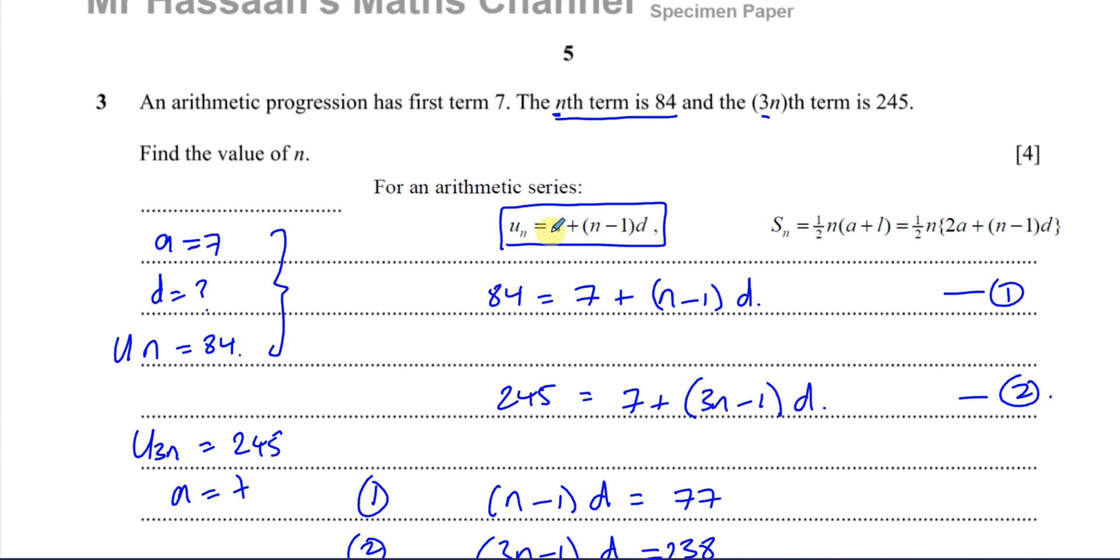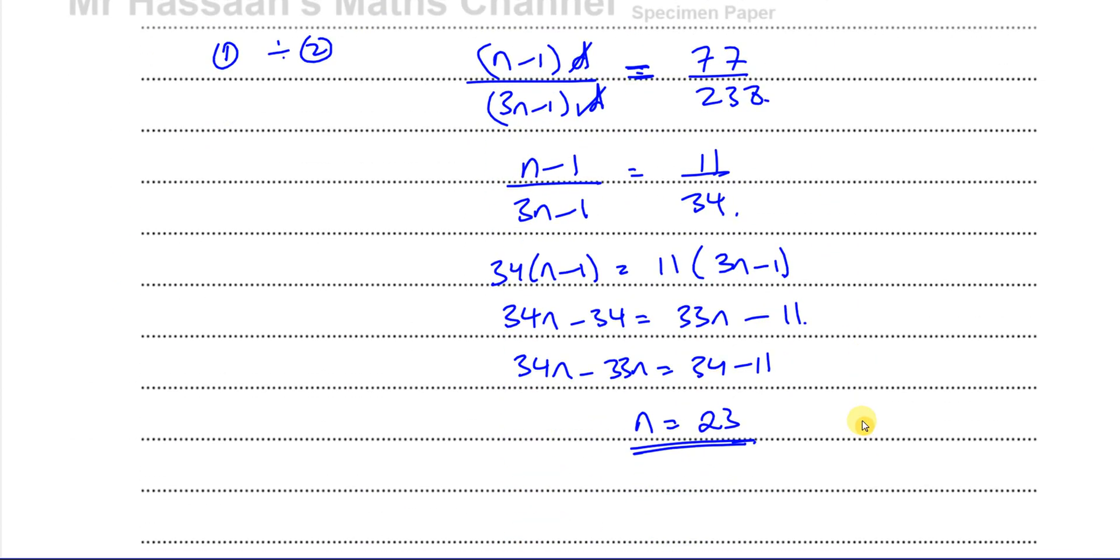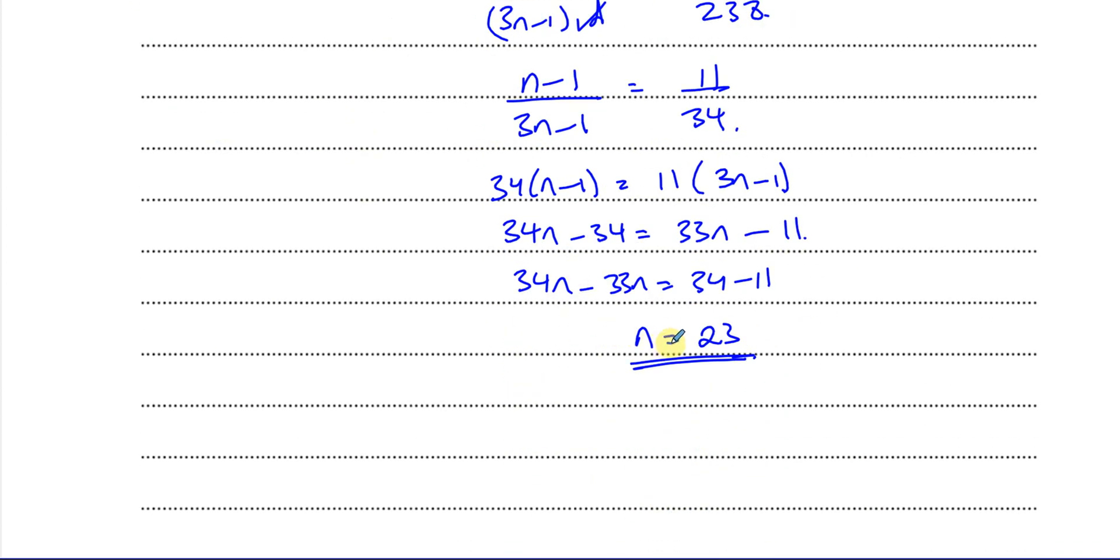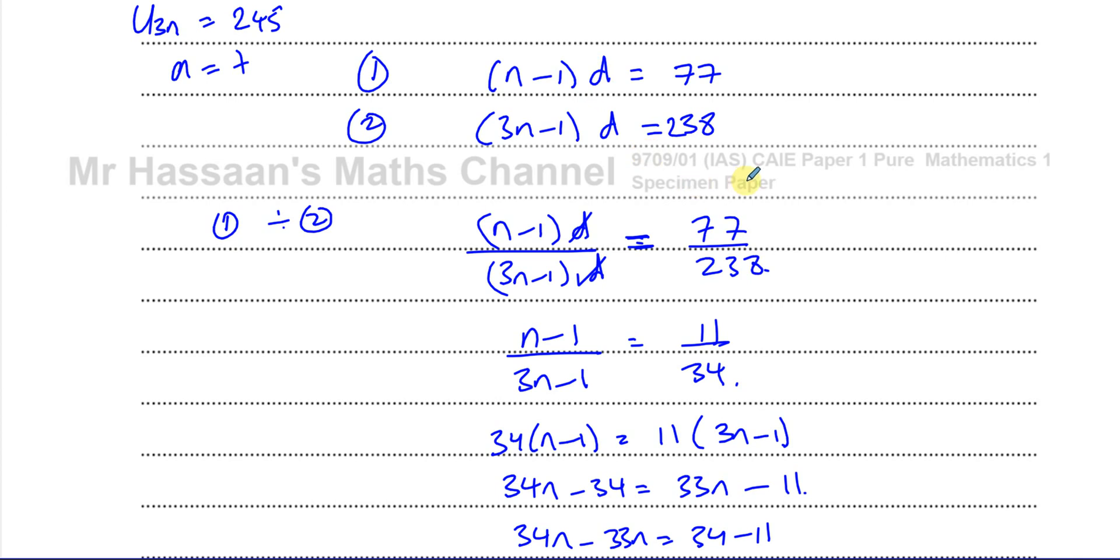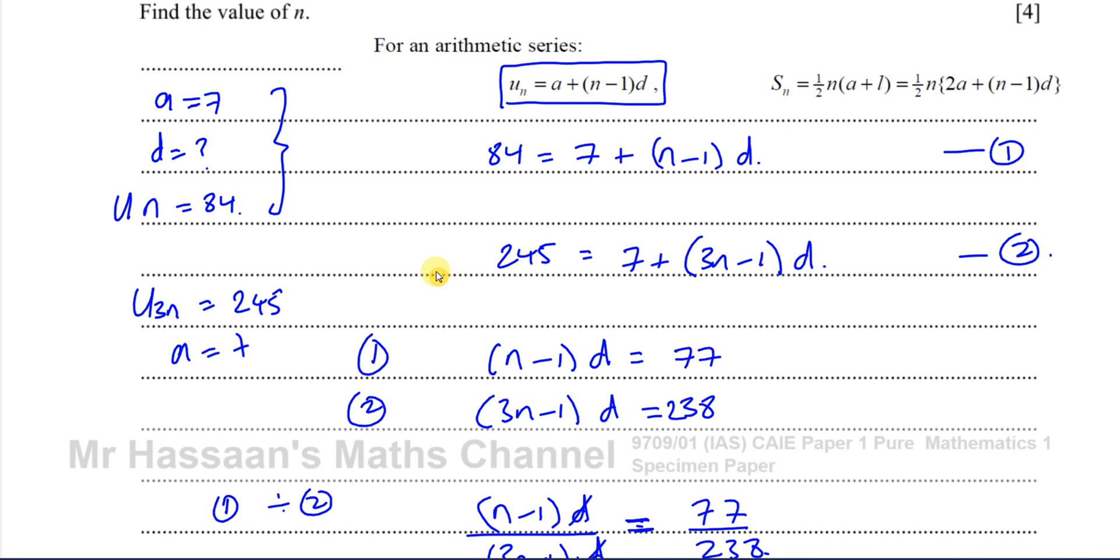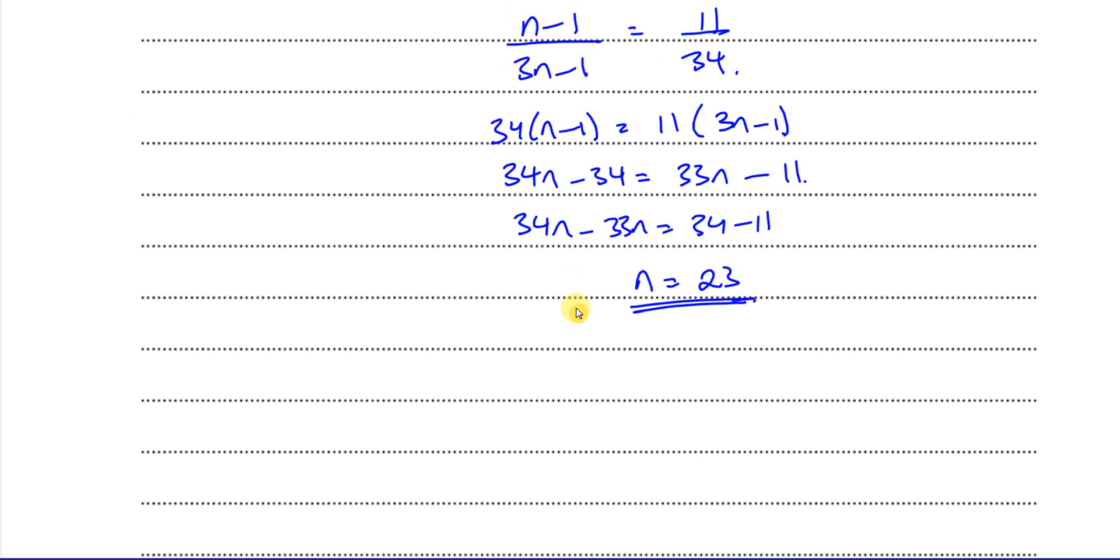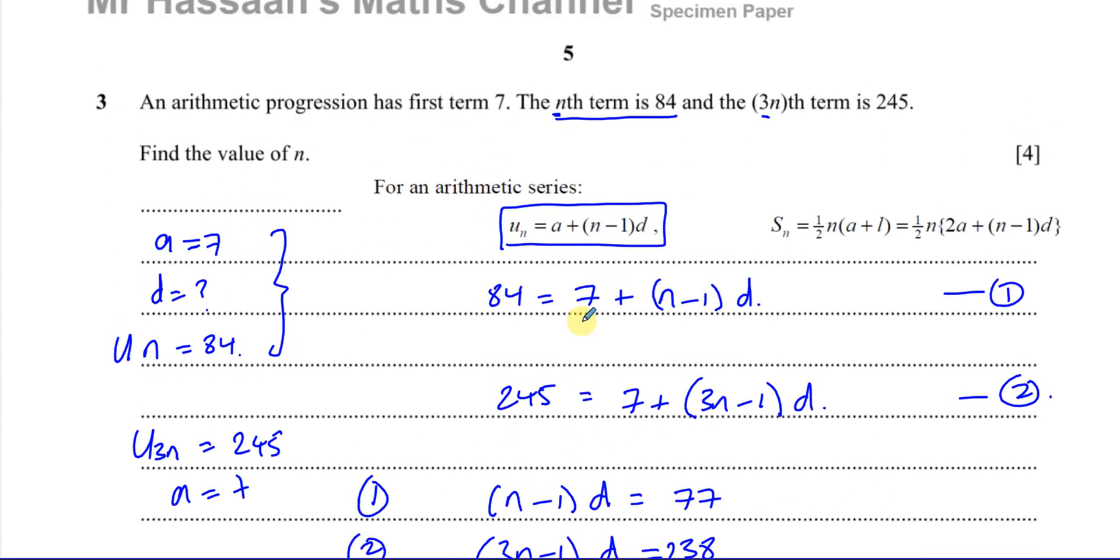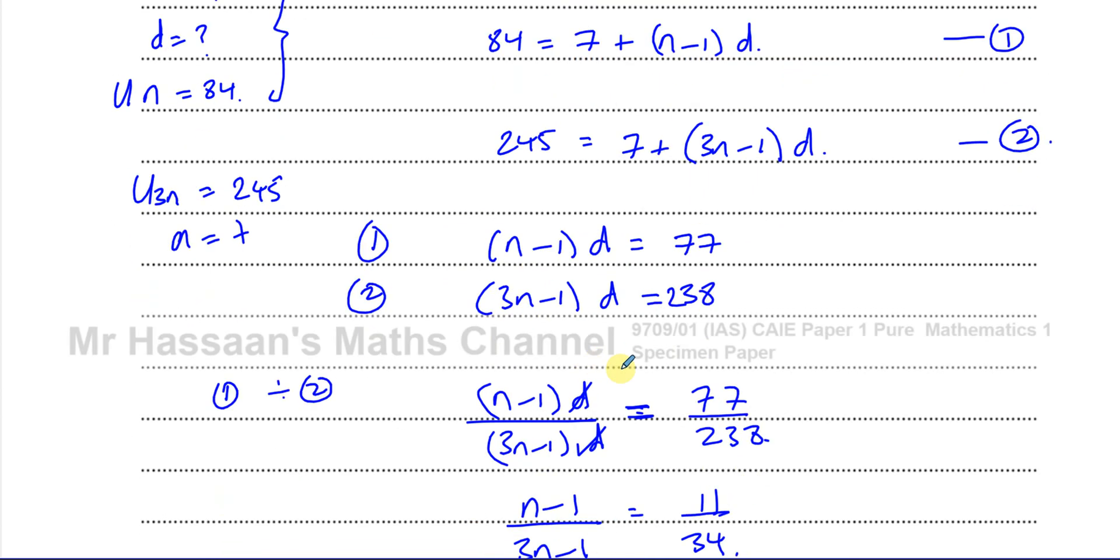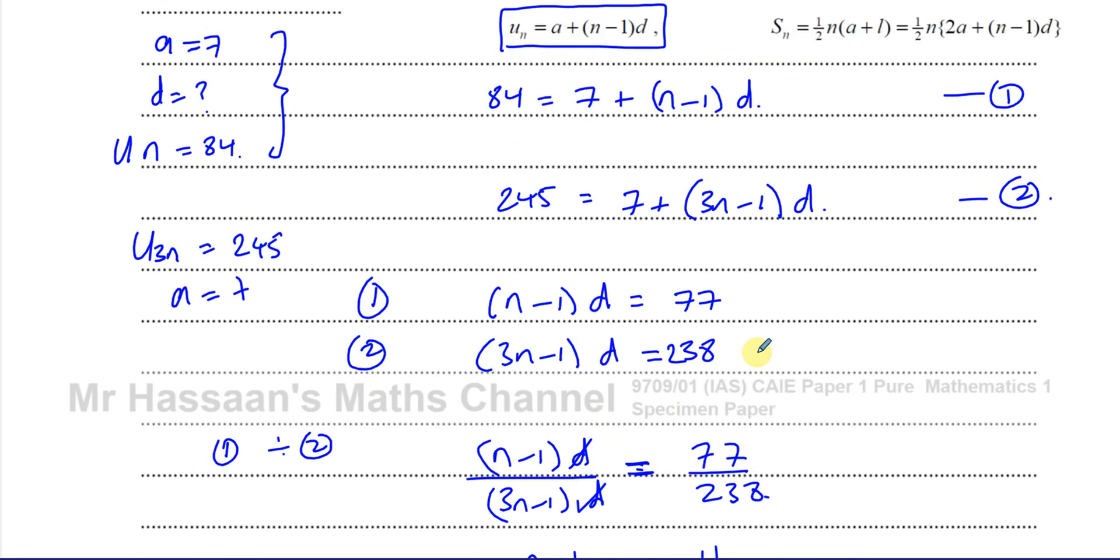So 245 equals 7 plus 3n minus 1 times d. So there's the answer to that question. They didn't ask us to find the common difference. If they did, we could find it by just replacing the n over here with 23 and find what d is. But they didn't ask us to do that. So that's fine. So there's the answer to question number 3. I think that's all of 3. So a simple question on arithmetic progressions series.